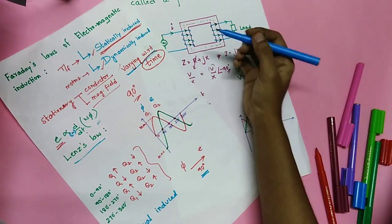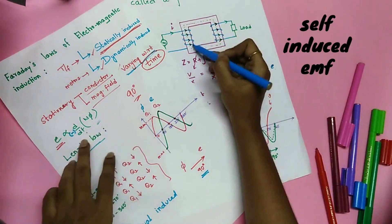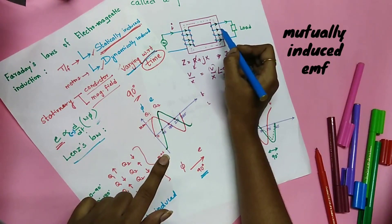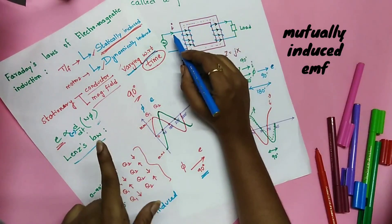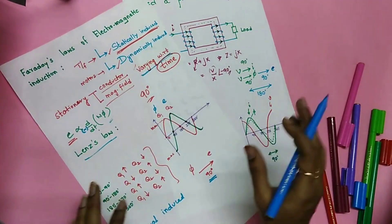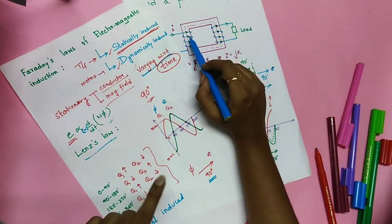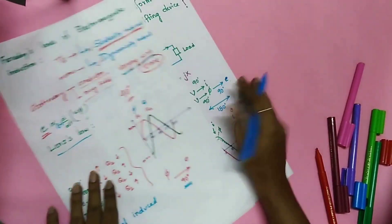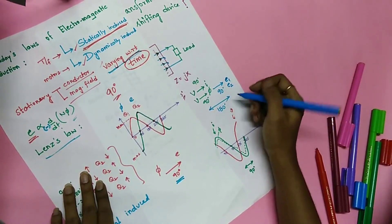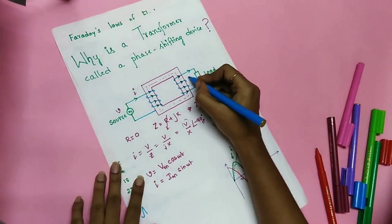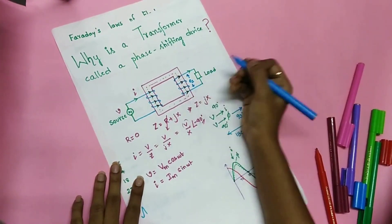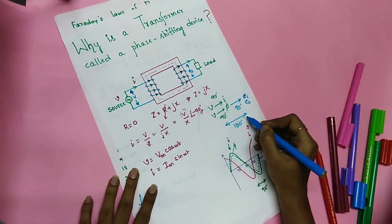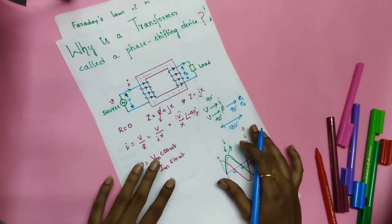In the first case, EMF is induced in the primary winding due to current flow in the primary winding. In the second case, EMF is induced in the secondary winding due to current in the primary winding. In both cases the EMF is induced due to the rate of change of flux produced by the primary current. Therefore E1 and E2 are both in phase. Since E2 and the input voltage V are displaced by 180 degrees, the transformer is called a phase shifting device.